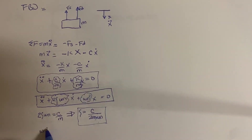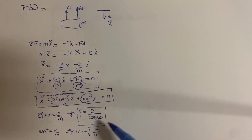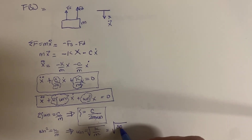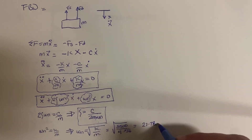So ωn² is equal to k/m, and therefore the natural frequency is the square root of k/m. This problem gives us the values of k and m, and with those we can find the natural frequency. Plugging in the numbers — 3,500 over 4.536 — gives us a natural frequency of 27.78 radians per second.